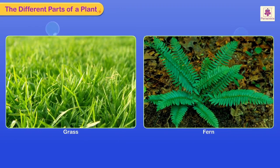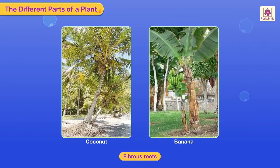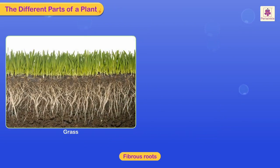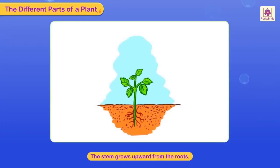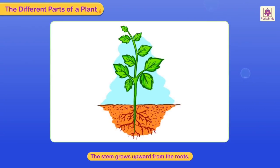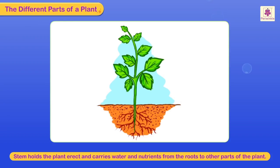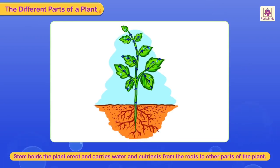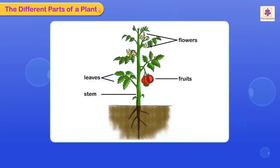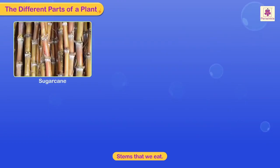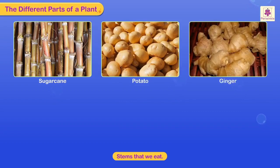Coconut, banana, grass, and onion have fibrous roots. The stem grows upward from the roots. The stem holds the plant erect and carries water and nutrients from the roots to other parts of the plant. Some stems are modified to store food. Flowers, leaves, and fruits grow on the stem.